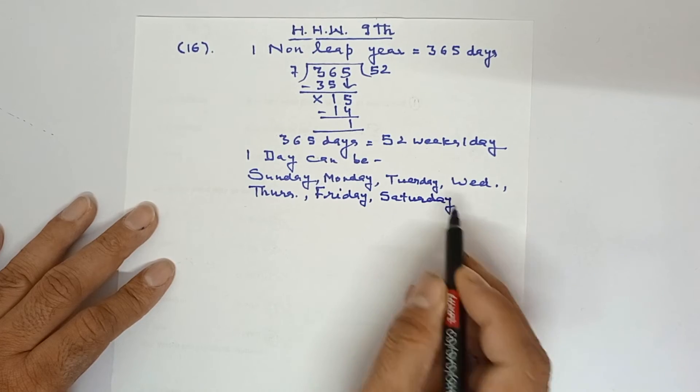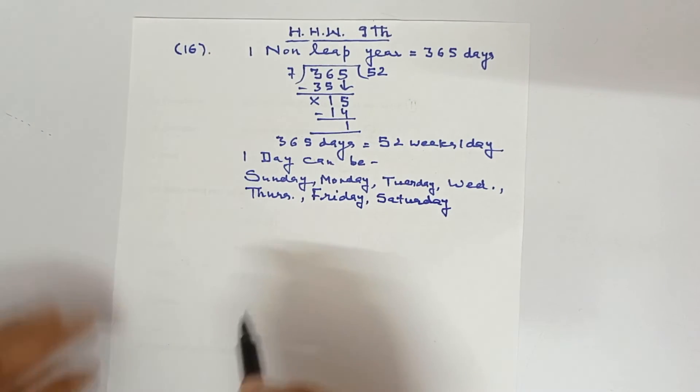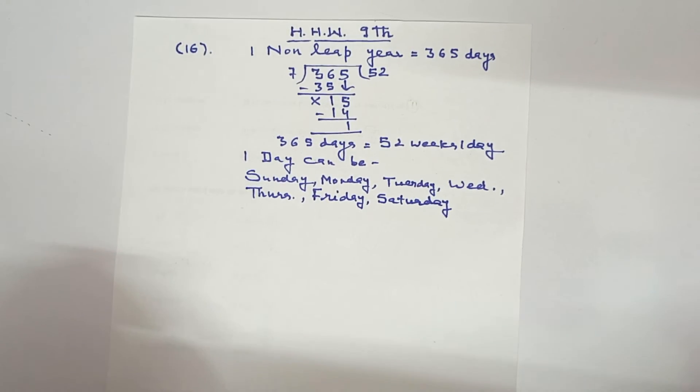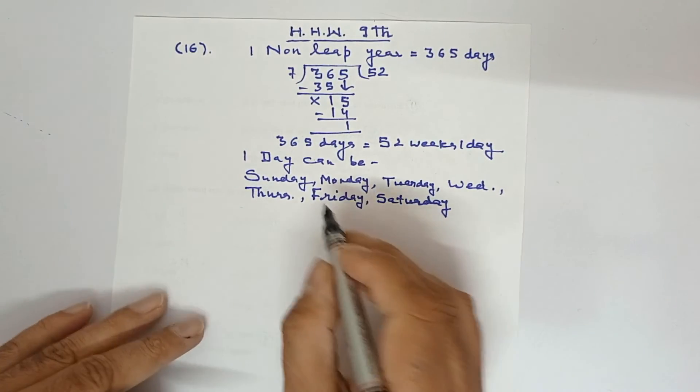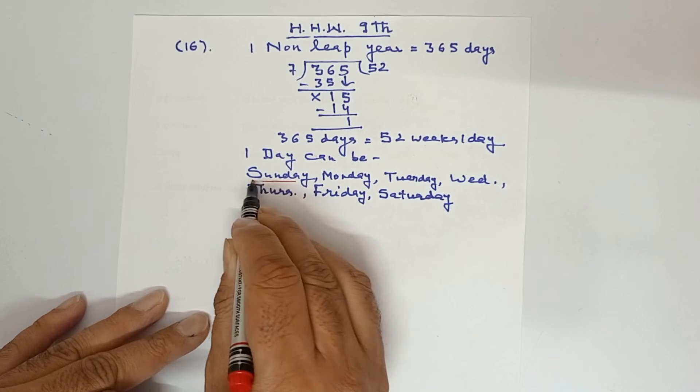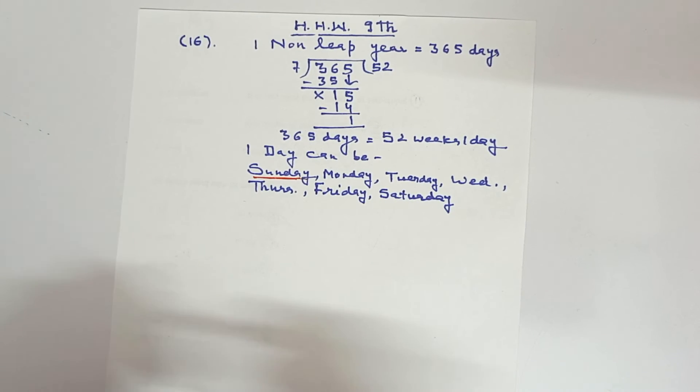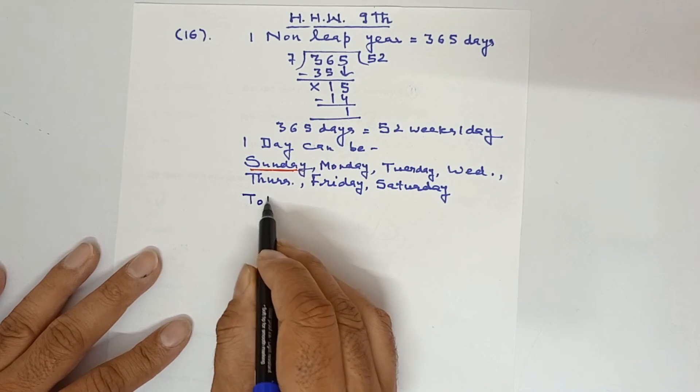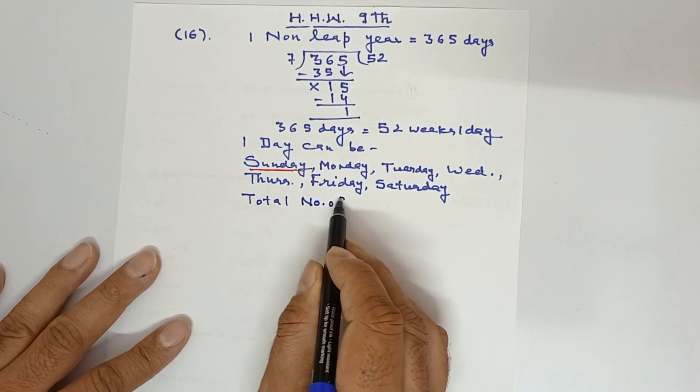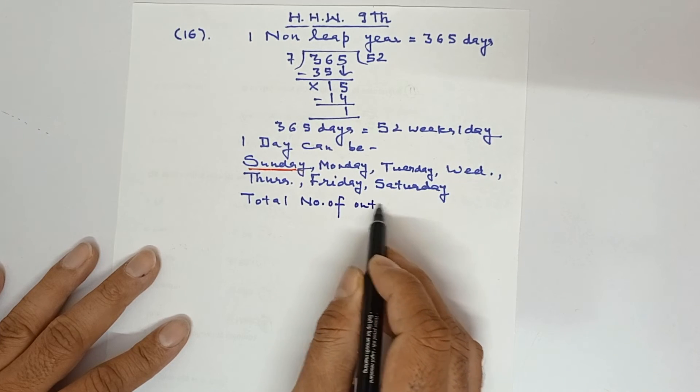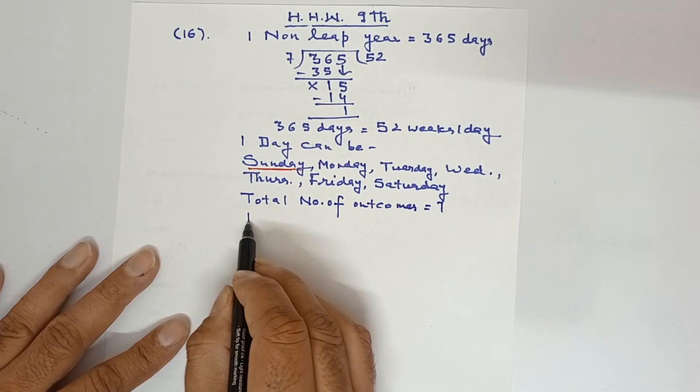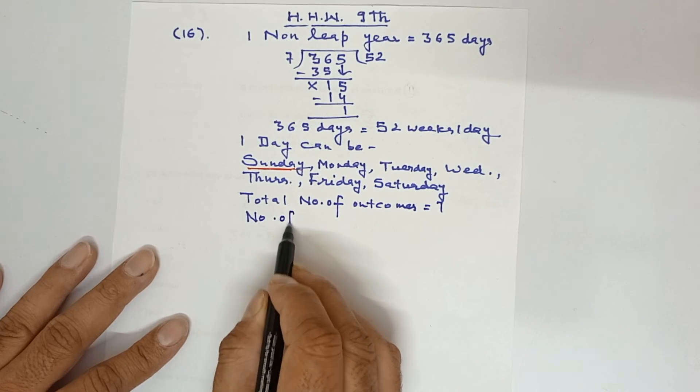Now we are to see 53 Sundays. So how many times is Sunday here? You can see that Sunday is only one time and total number of days are seven. So we will write total number of outcomes equals seven.